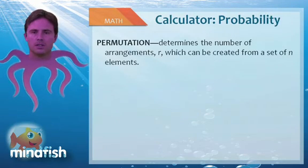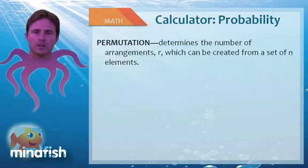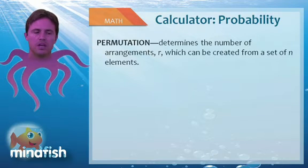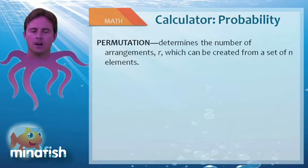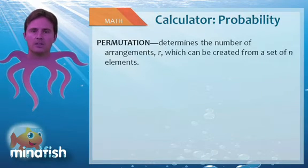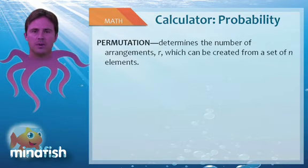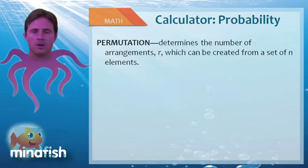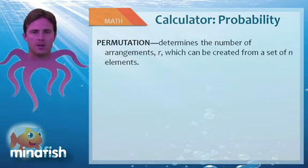Probability. Probability questions generally involve one of two types with your calculator. One is permutation. Permutations define the number of arrangements r that can be created from a set n. For example, if we had 10 students in a class, and we wanted to pick a president, vice president, secretary, we would want to type 10 NPR 3.